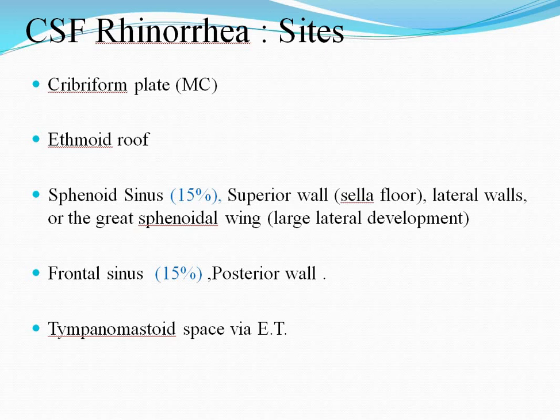CSF rhinorrhea sites: the most common site is the cribriform plate, then the ethmoid roof, sphenoid sinus — the superior wall, lateral wall, or the greater sphenoidal wings — frontal sinus posterior wall, and the tympanomastoid space via the eustachian tube.